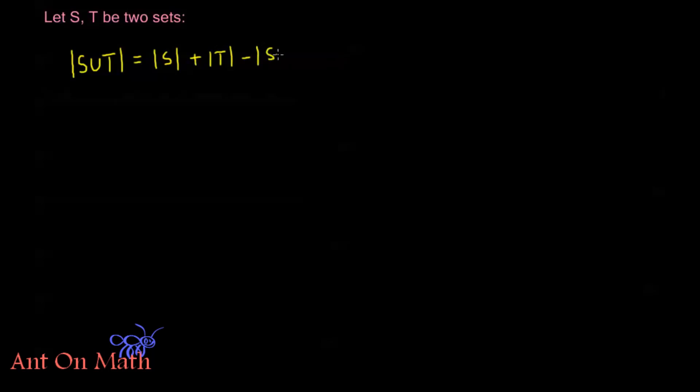Talking about unions of events, we have a simple identity. If S and T are two sets, then the order of S union T is equal to the order of S plus the order of T minus the order of the intersection between S and T.